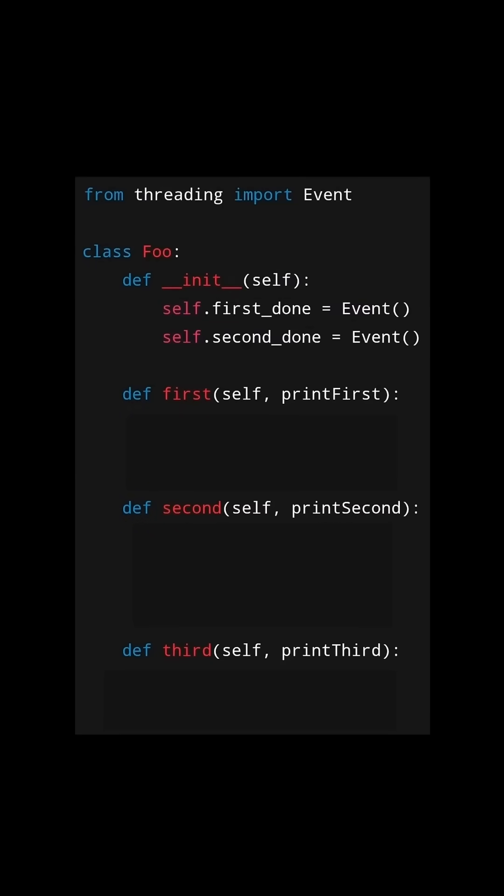In the constructor, we set up two events: first_done and second_done. If a thread comes in and calls the first method, we print first, then set the first_done event. This will release any waiting threads on this event.